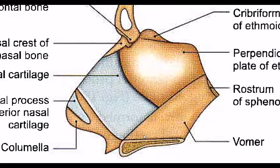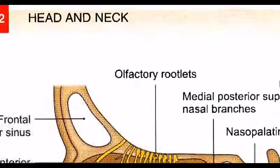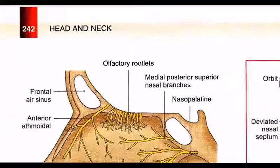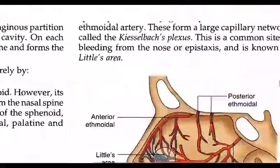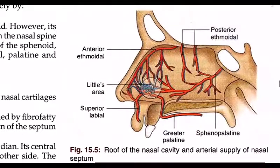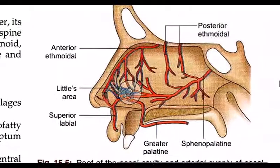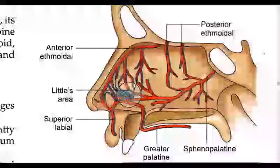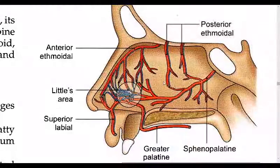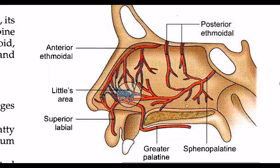Now we will talk about the arterial supply. For the arterial supply, we divide the septum into four parts using one vertical line and one horizontal line, giving us four quadrants.